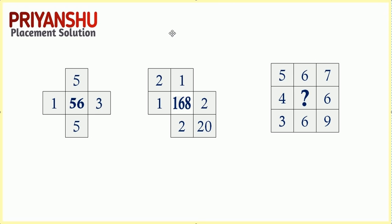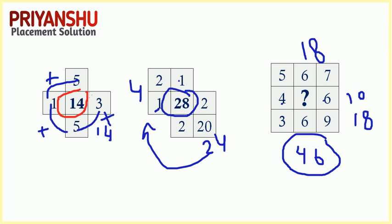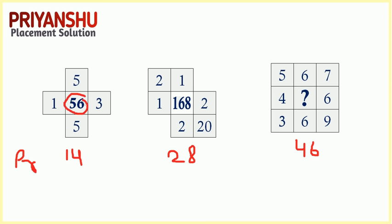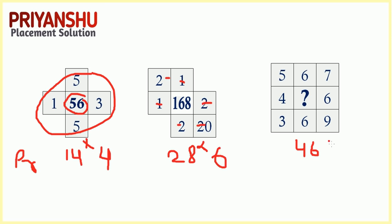This next question is totally based on the previous question, but the difference is I just changed the colors. You can verify: in the previous question you got 14, and here you can see 14, 28, and 46. The relation between 14 and 50 is multiplication by 4 — there are 4 total blocks, so 14 multiplied by 4. Here there are 6 blocks, so you multiply by 6. And in the next one there are 8 blocks, so you multiply by 8. You can calculate and comment your answer.